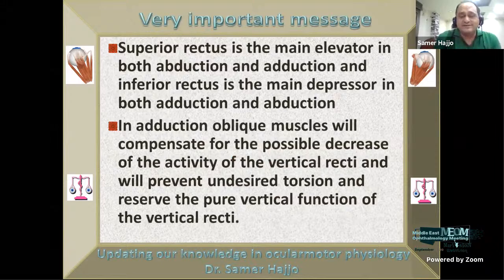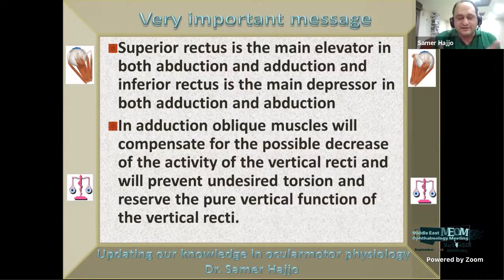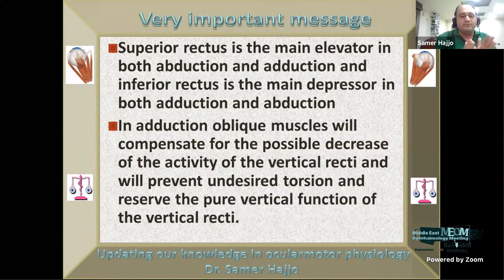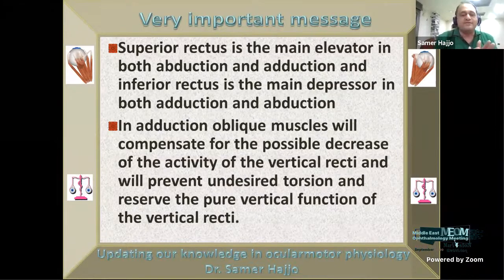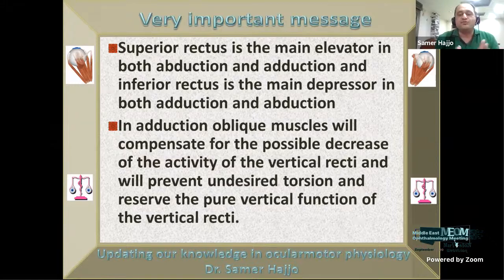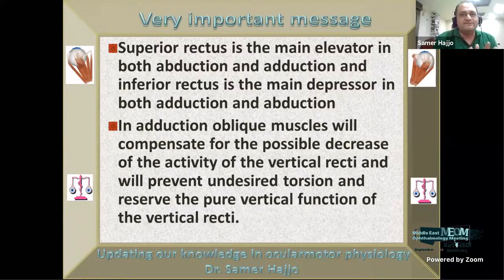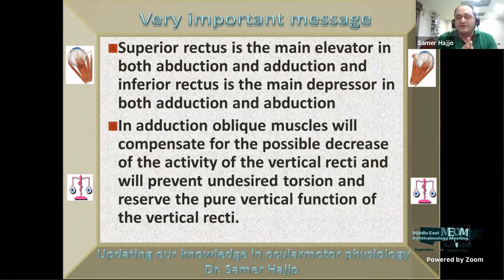The very important message from this presentation: the superior rectus is the main elevator in both abduction and adduction, and the inferior rectus is the main depressor in both abduction and adduction. In adduction, the oblique muscles compensate for the possible decrease in activity of the vertical rectus and prevent undesired torsion. The oblique muscle is therefore an accessory muscle in elevation or depression — the main elevator is the superior rectus and the main depressor is the inferior rectus, even in adduction. Thank you all for your patience.